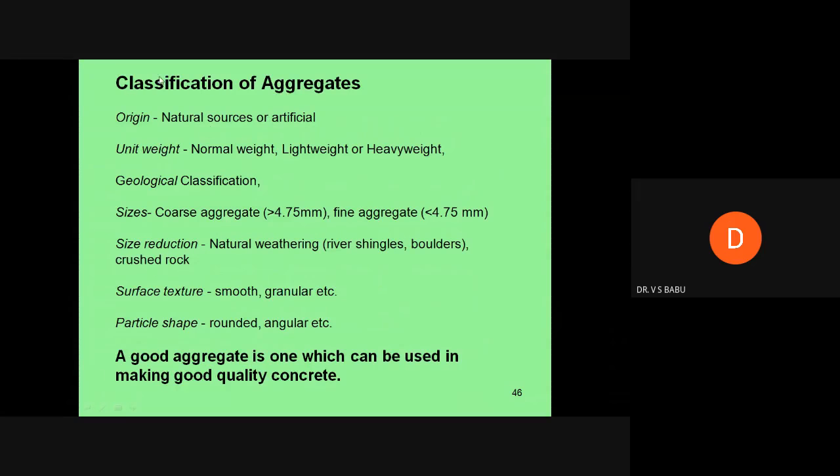The majority of the skeleton will be formed by the aggregates, so we have to study the basic properties. We will see the classification based on origin, unit weight, geological classification, and size. Coarse aggregates are generally 4.75 mm and above, and below that is fine aggregate.